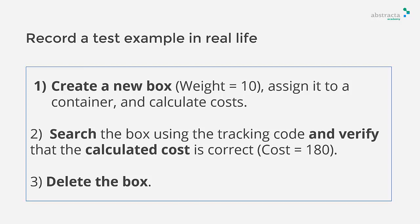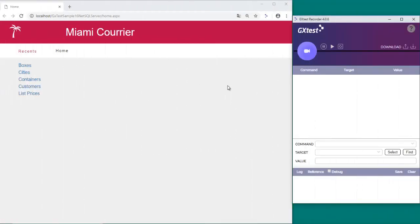We will be doing this on the application to let GX test record the actions. Let's start by pressing the record button. The first action is to create a box.